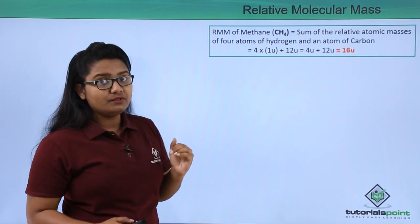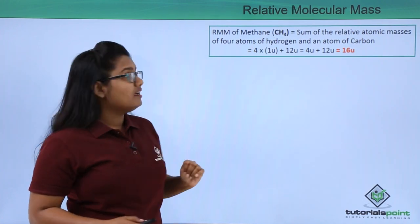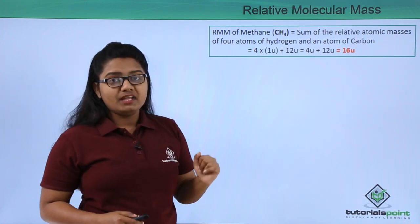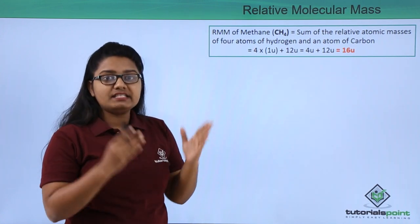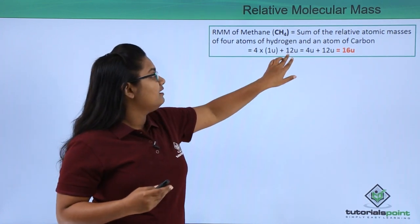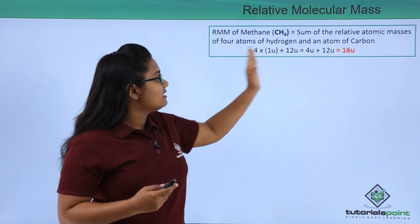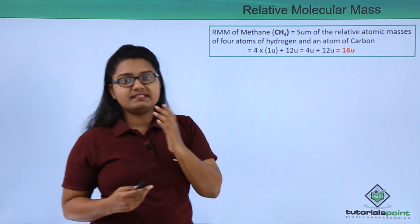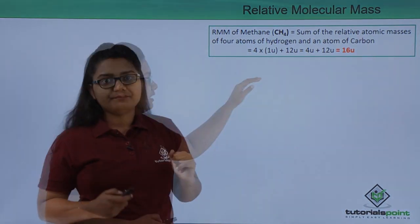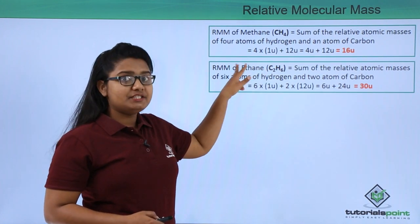A methane molecule has one carbon atom and four hydrogen atoms. To find its relative molecular mass, we sum the relative atomic masses of four hydrogen atoms and one carbon atom: 4 × 1u + 12u = 16u. Therefore, the relative molecular mass of methane is 16u.